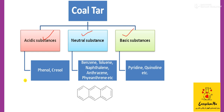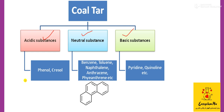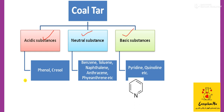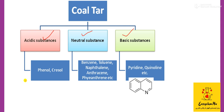Then we have anthracene, and phenanthrene. In anthracene and phenanthrene, there are three rings fused together. In phenanthrene, the three rings are fused in a linear chain, whereas in anthracene they are not fused linearly. The basic substances from coal tar are pyridine — where one nitrogen is also attached — and quinoline, which has two benzene rings. You should know the difference between these two as well.